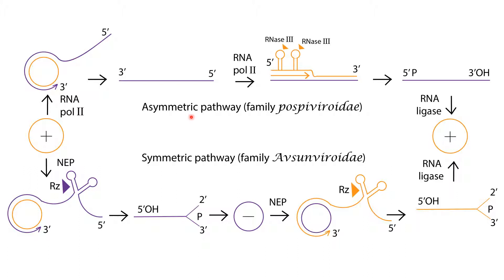This positive strand RNA is subsequently cleaved into unit-length monomers that are ligated into a circle. In the case of symmetric rolling circle replication, members of Avsunviroidae replicate via a symmetric circular replication pathway.